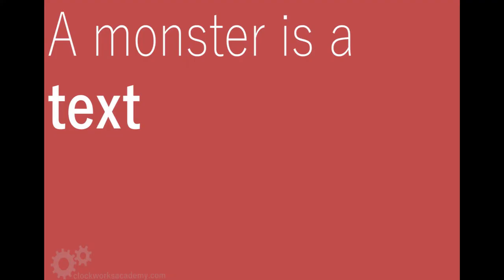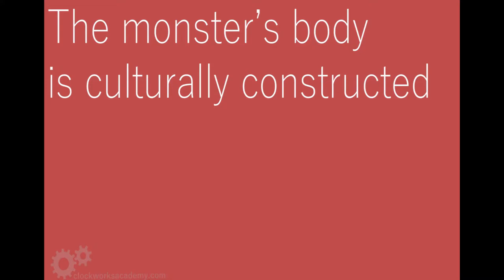The first thing I want to say here is that a monster is a text. Remember I said a text is anything that can be read? The text is not only the book, not only the movie. The monster themselves — in the case of The Bride of Frankenstein, himself and herself, both monsters — are texts. They have culturally constructed meanings. The monster's body is culturally constructed; it is only in the context of a specific cultural situation that we can recognize a monster. A particular body in a particular shape is only monstrous because the culture constructs it to be monstrous, and the way that the culture constructs it to be monstrous tells us things about the culture and its assumptions.